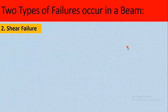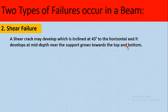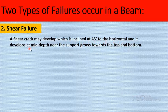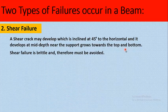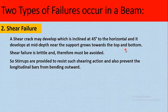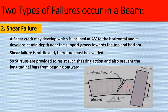The other type of failure that can occur in a beam is shear failure. A shear crack may develop inclined at 45 degrees to the horizontal, developing at mid-depth near the support and growing towards the top and bottom. Shear failure is brittle and therefore must be avoided. Stirrups are provided to resist such shearing action and also prevent the longitudinal bars from bending outward. As you can see in this picture, shear cracks appear near the end supports or near the columns and are inclined at a 45 degree angle. To avoid these types of cracks, stirrups are provided.